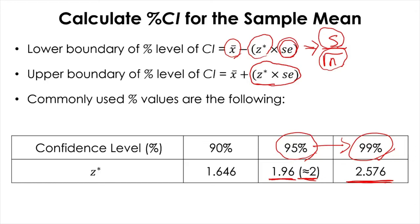It is also common to report plus or minus one standard deviation instead of a 95% confidence interval along with the sample mean, but they serve slightly different purposes that many people are not attentive to. If you want to indicate the average variability of the data or observations in the sample, you use standard deviation. On the other hand, if you want to indicate the amount of uncertainty you have in the estimation of the unknown population mean, you report the confidence interval.